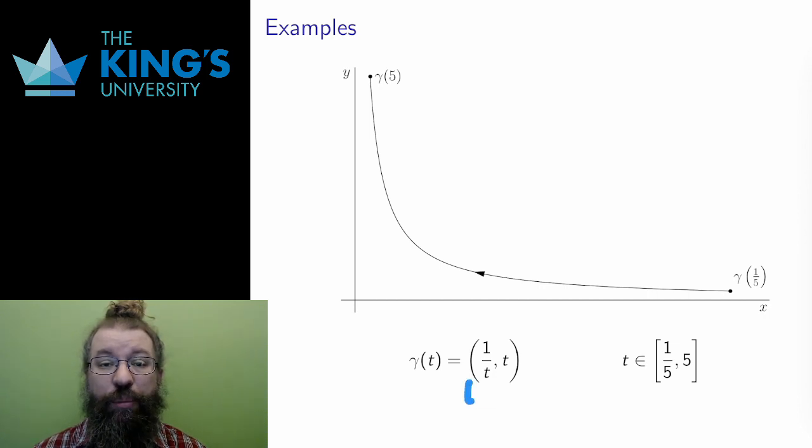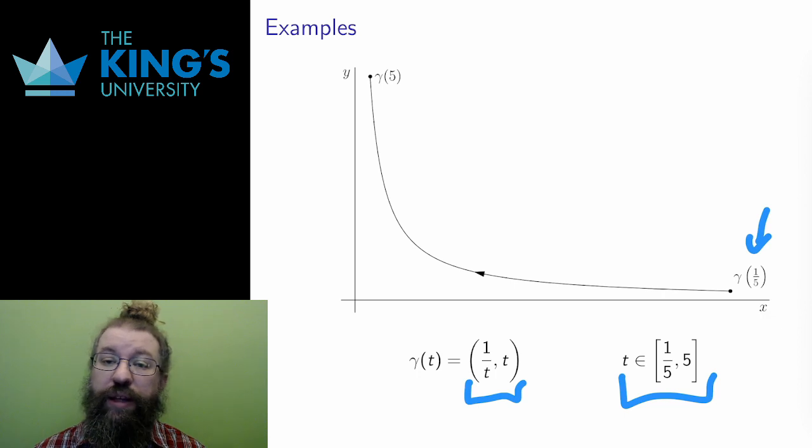The next example is the curve gamma(t) = (1/t, t), on the domain t in the interval [1/5, 5]. Usually t equals 0 is the start, but that doesn't need to be the case. I can let t equals 1/5 be the start here. Movement can go in any direction, of course. This looks a bit like the graph of a function, but the movement is towards the negative x-direction.